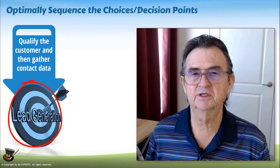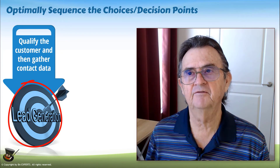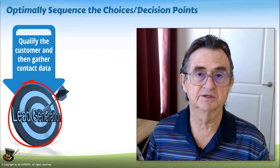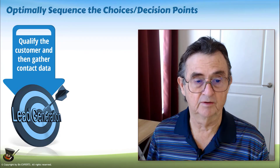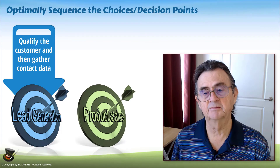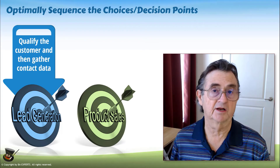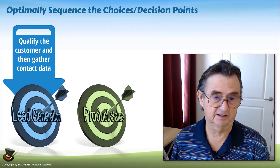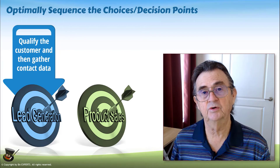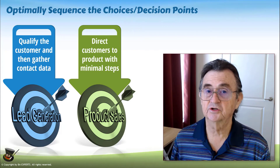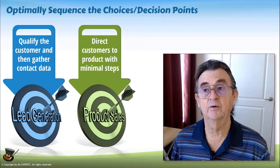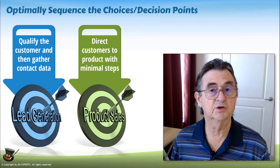In a lead generation bot, you're more likely to have very limited interaction with the customer before you start gathering their name, their email, their address, things like that, as well as what it is they're really looking for. If you're dealing with a sales bot — meaning the bot is designed to sell a product — the outcome of the bot should be that they are placing an order and getting your product. In that case, you want to get only enough information to make sure you're guiding them to the correct product, so contact information is less important than understanding what features they want and how you can guide them there.